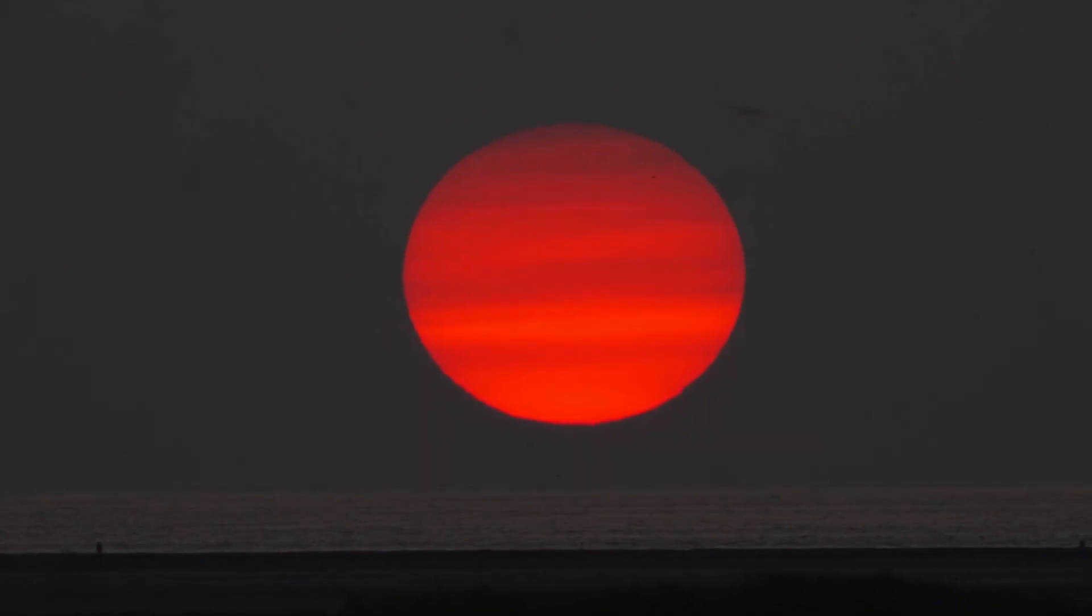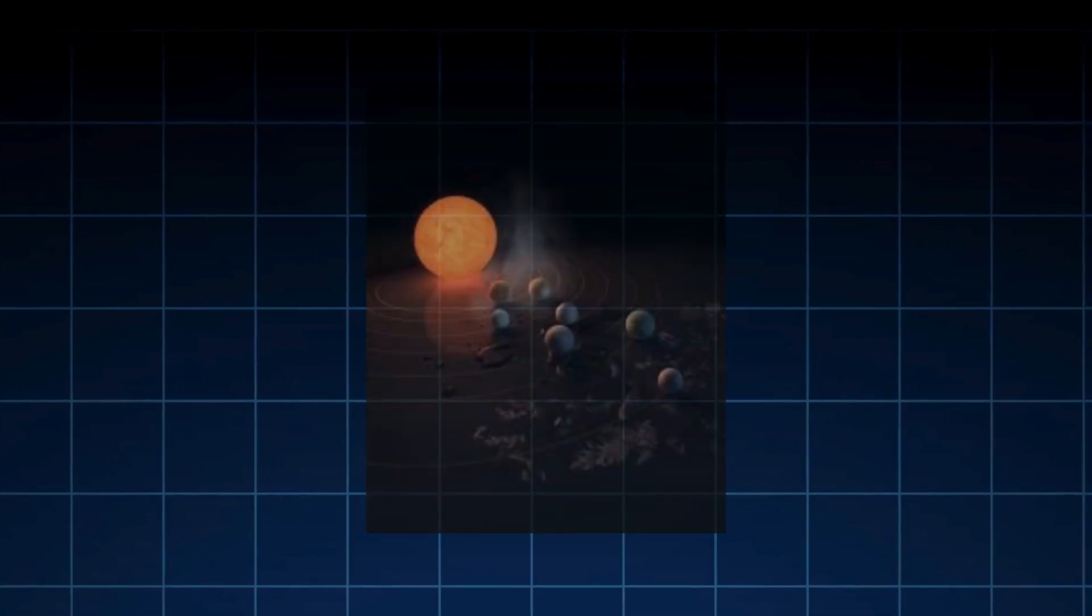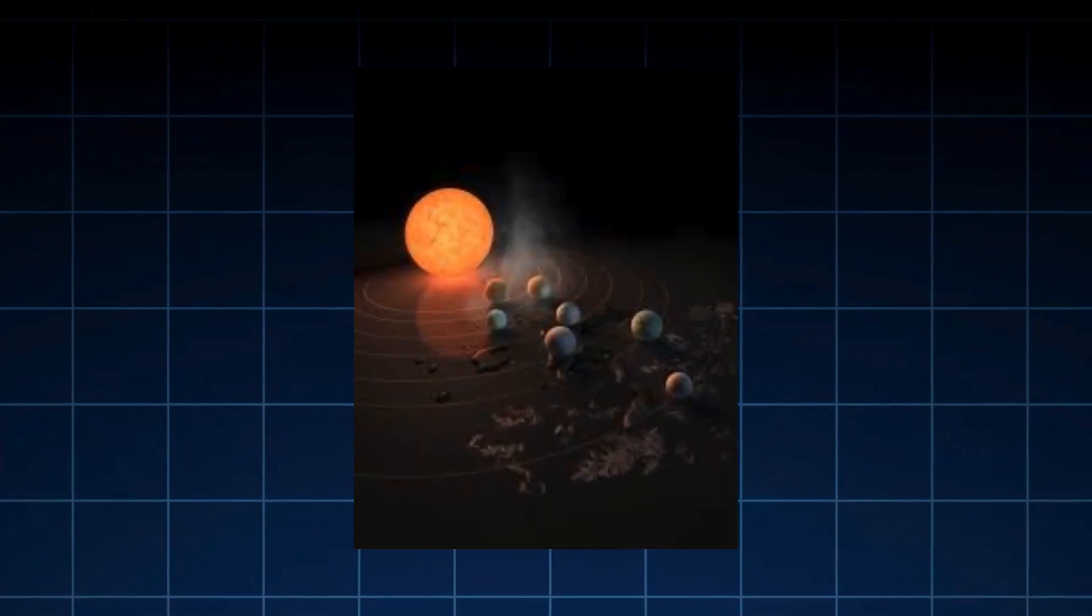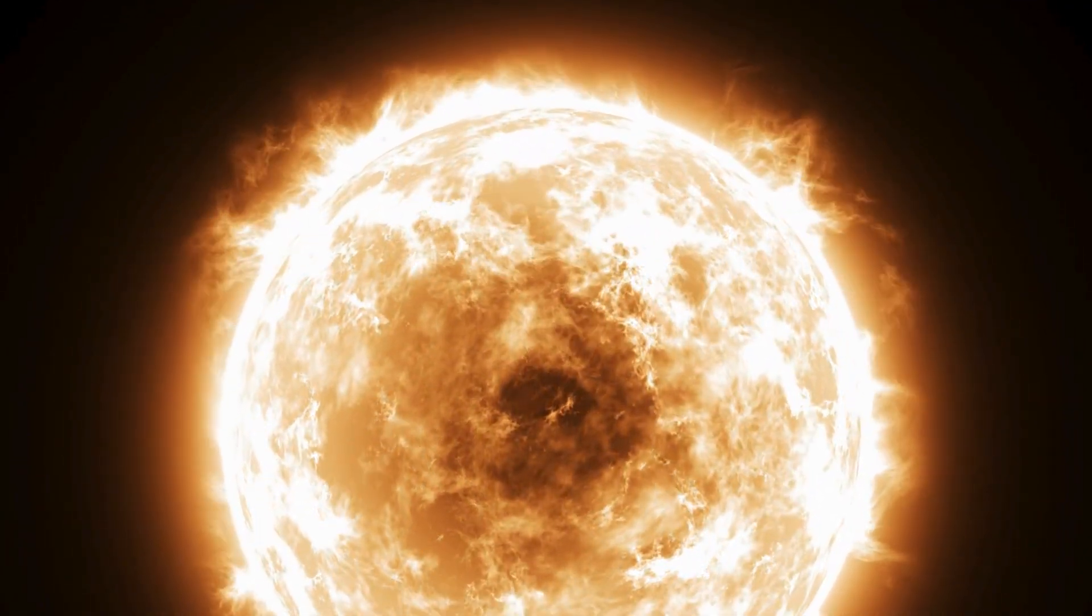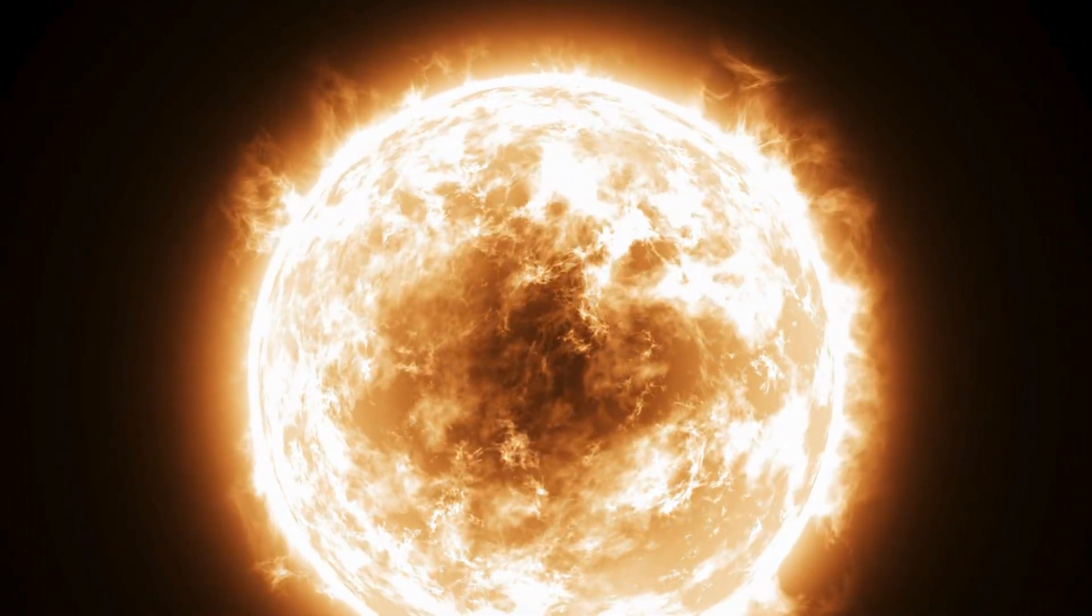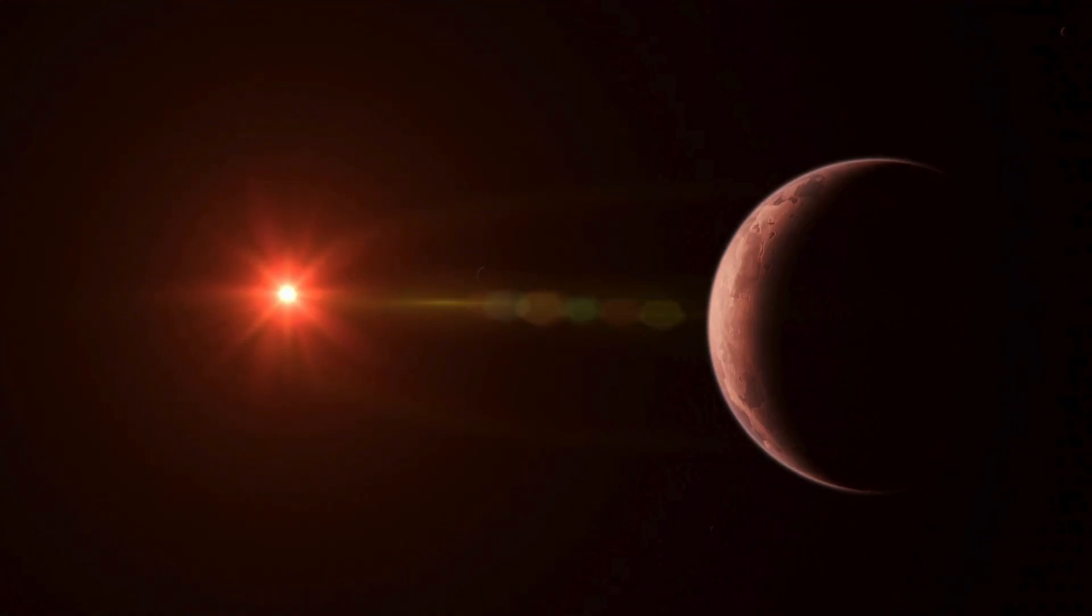That assumes an atmosphere ever formed. Red dwarfs are incredibly long-lived. TRAPPIST-1 is expected to shine for 10 trillion more years, 700 times the universe's current age. Our sun has only 5 billion years left before becoming a red giant. Though you might think a red dwarf's longevity gives life plenty of time to emerge, their chaotic, energetic teenage years last longer.